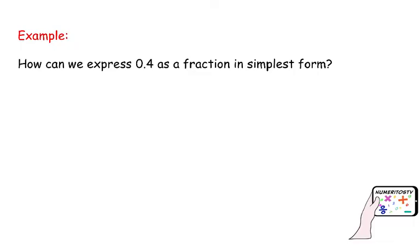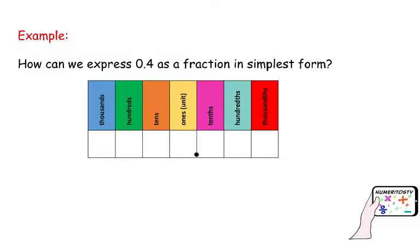Let's do some examples. How can we express 4 tenths, or 0.4, as a fraction in simplest form? We are going to use our place value chart. I am going to position my numbers in the correct place value. I don't have a whole, so 0, then my decimal point, and then that 4 — the last digit of my number — is positioned in the tenths place.